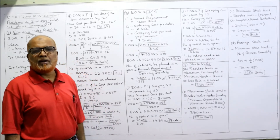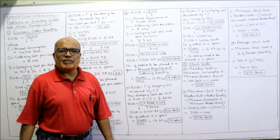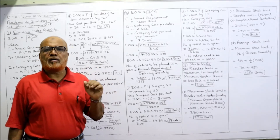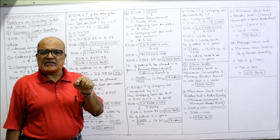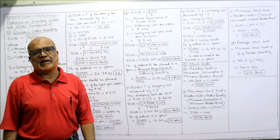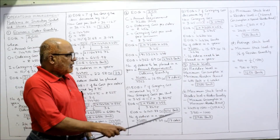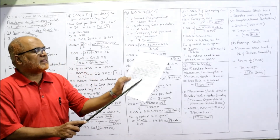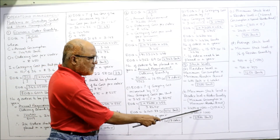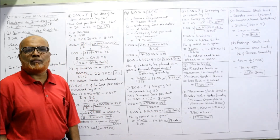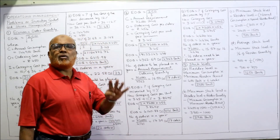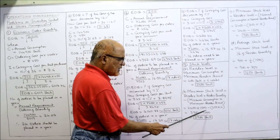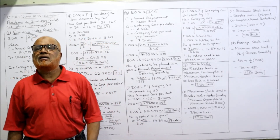Maximum stock level formula: reorder level + reorder quantity − (minimum consumption × minimum reorder period). Reorder level = 2400, reorder quantity = 1500, minimum consumption = 250 units, minimum reorder period = 4 weeks. So: 2400 + 1500 − (250 × 4) = 3900 − 1000 = 2900 units. This is the maximum stock level.